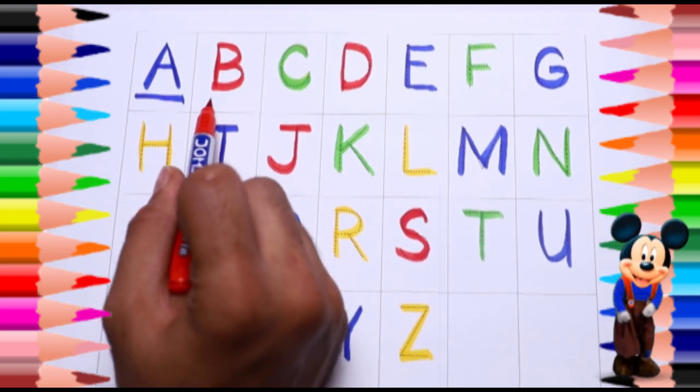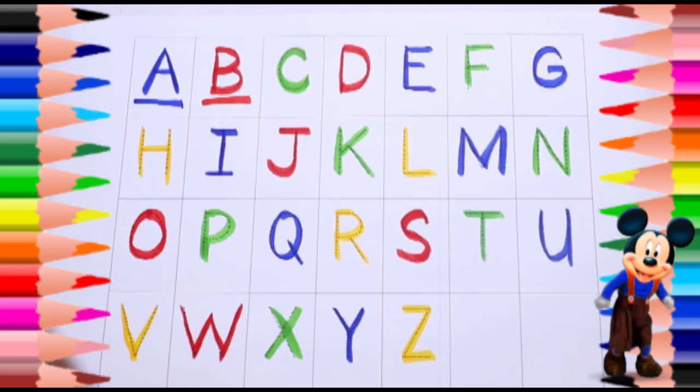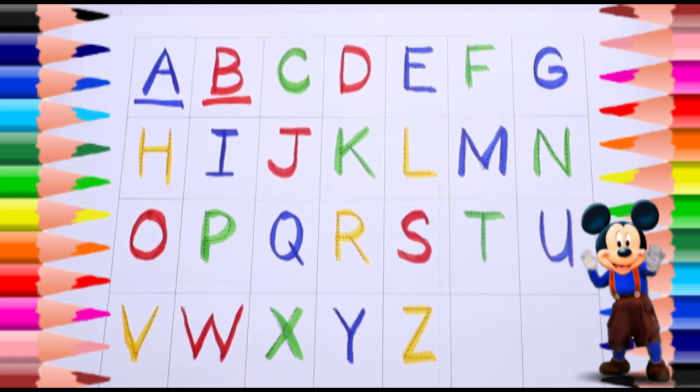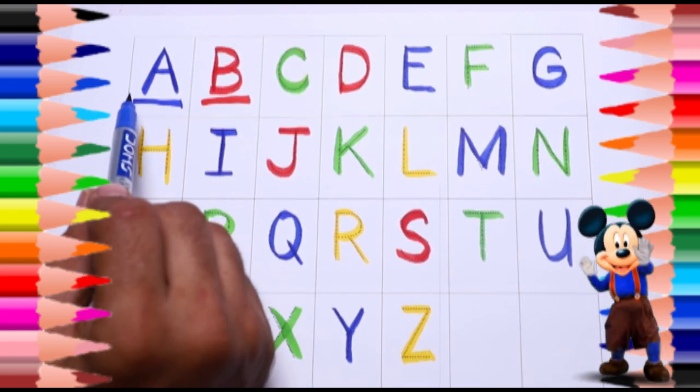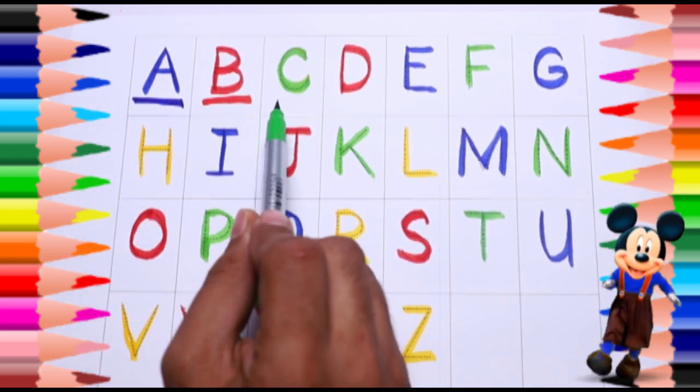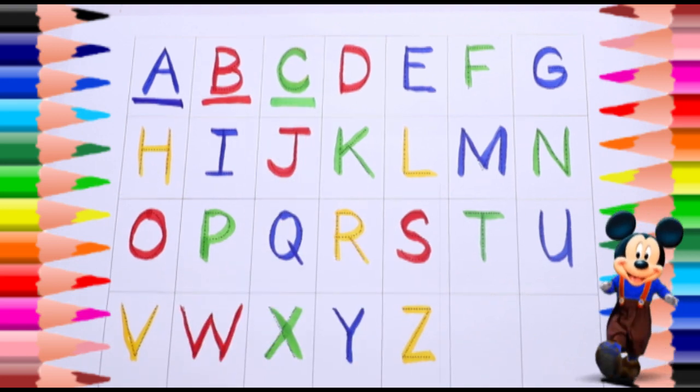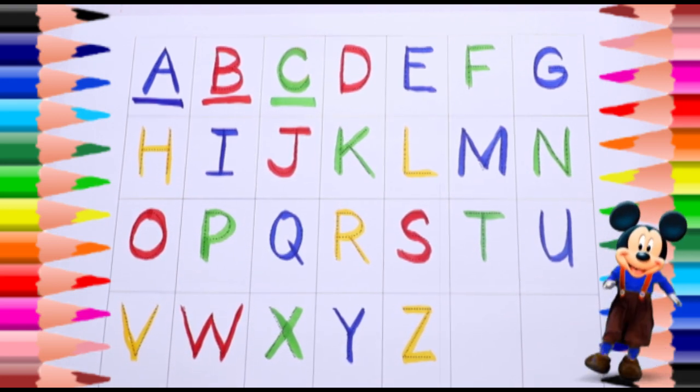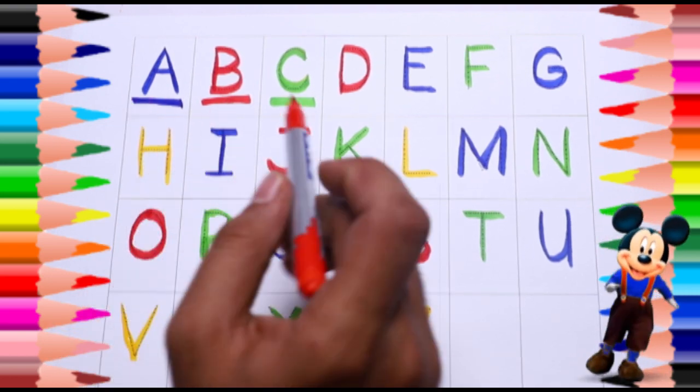B, red color B, B for ball. A for apple. Green color C, C for cat. Red color D, D for dog.